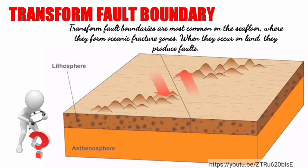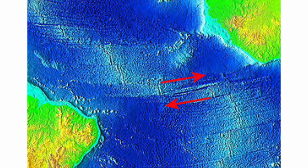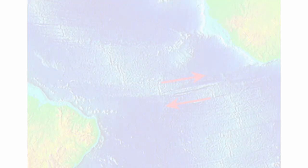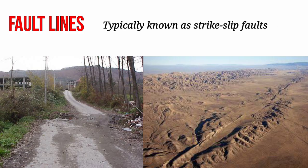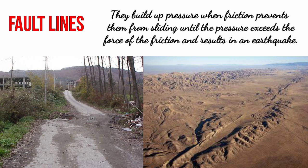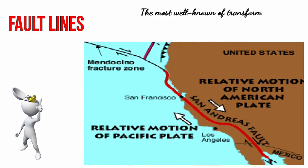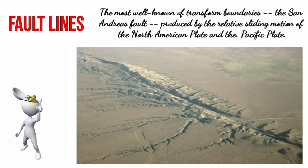When they occur on land, they produce faults. These oceanic fracture zones form large valleys or trenches that connect spreading oceanic ridges. These features can extend anywhere from 100 miles to more than 1,000 miles, reaching depths of up to 5 miles. One of the primary landforms produced by a transform boundary is a fault, typically known as strike-slip faults. They build up pressure when friction prevents them from sliding, until the pressure exceeds the force of friction and results in an earthquake. One example of a fault line is the San Andreas Fault, produced by the relative sliding motion of the North American Plate and the Pacific Plate.